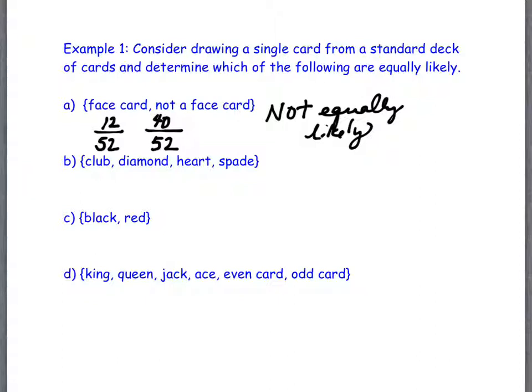Are there going to be any questions? I want to include jokers, or are we just doing... No. We're going to use a standard card deck without the jokers. Clubs. How many clubs are there? Thirteen out of fifty-two. How many diamonds are there? Thirteen out of fifty-two. Hearts? Thirteen out of fifty-two. And spades? Thirteen out of fifty-two. Are these equally likely? Yes. So these are equally likely.